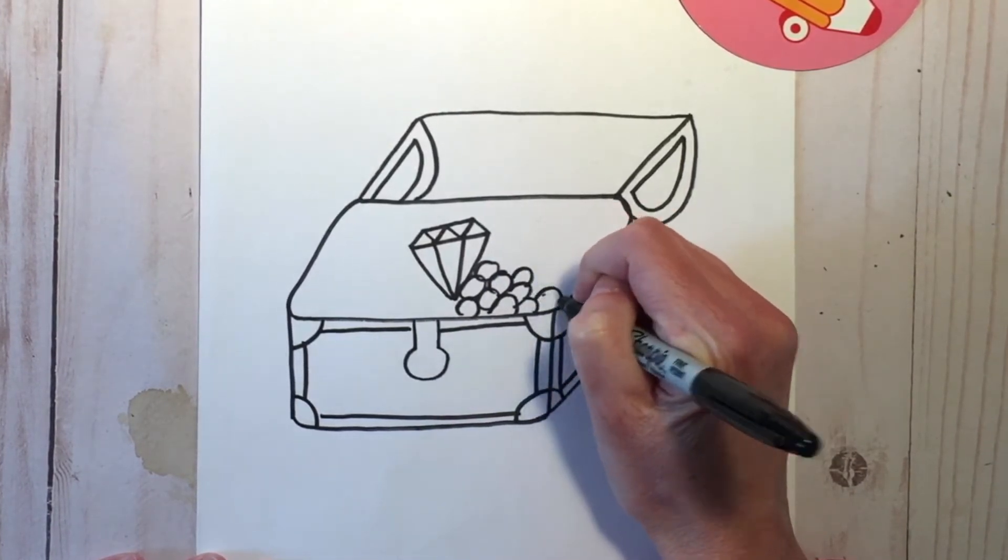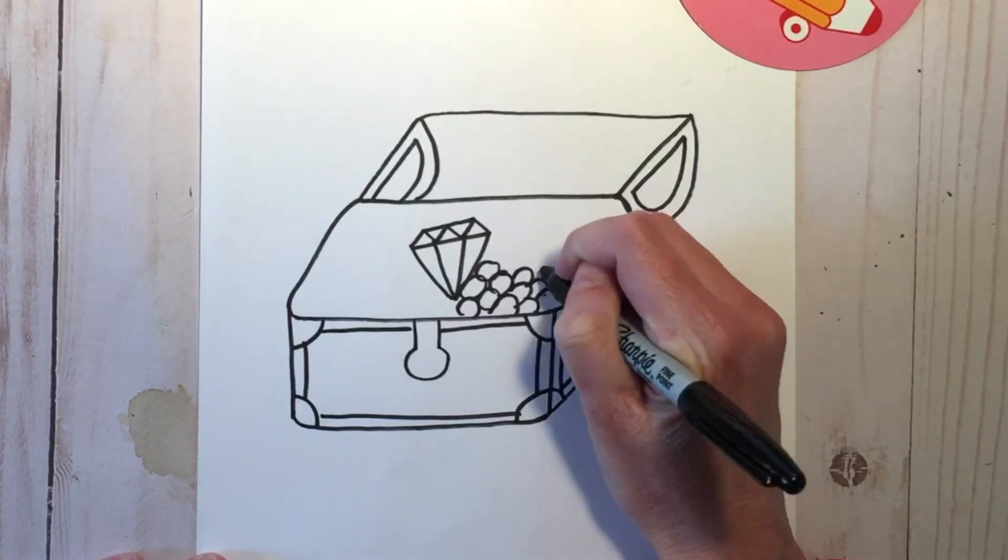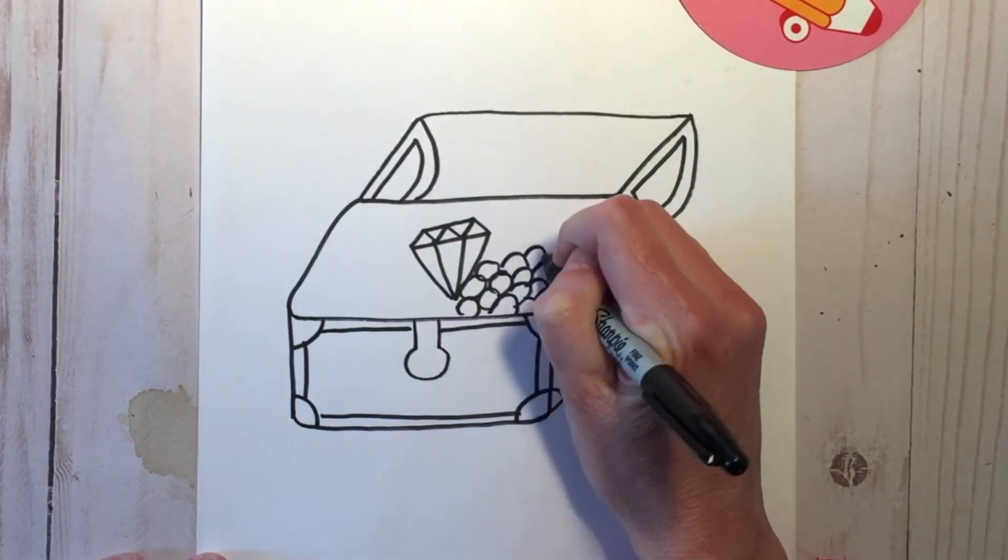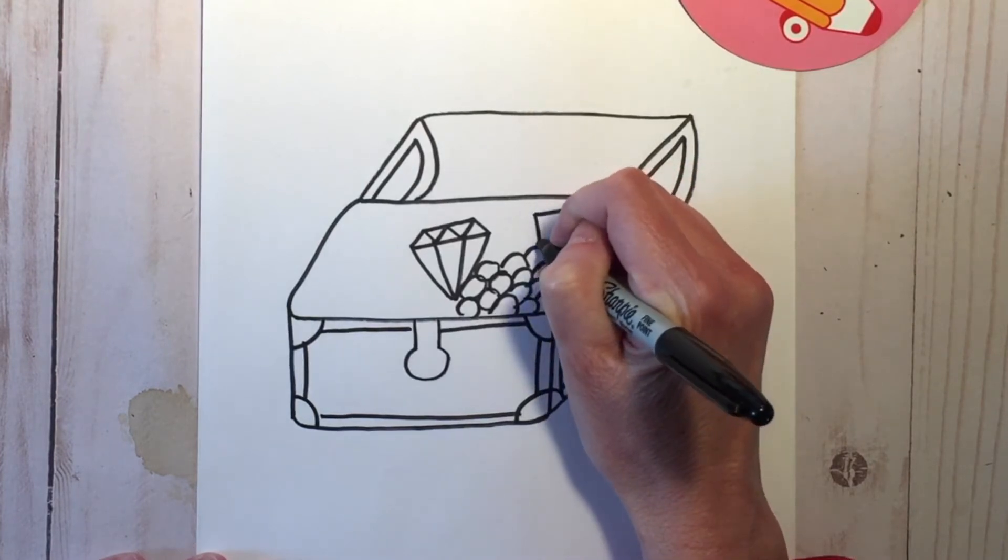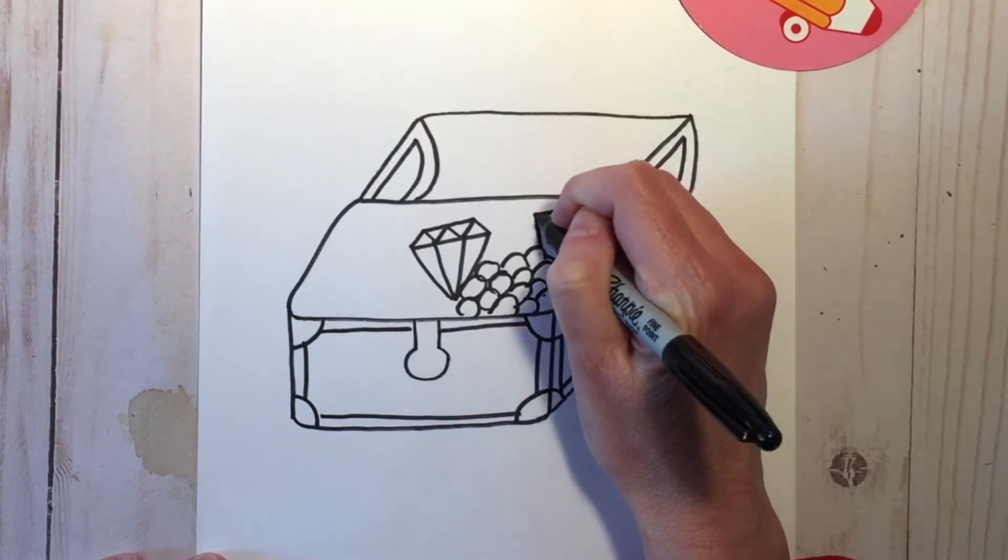I'm going to put like a big golden cup. Afterwards if you color this, this is when you can add all the golden and silver colors or whatever you want.